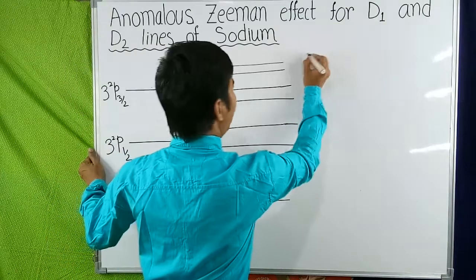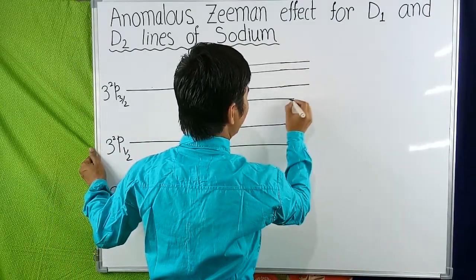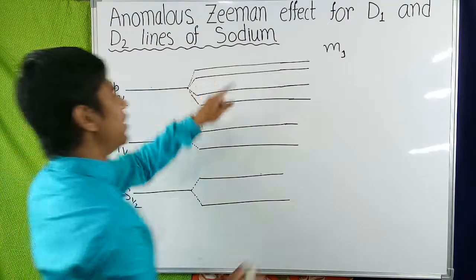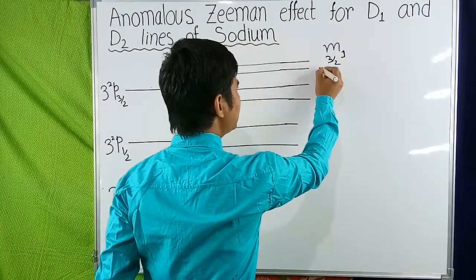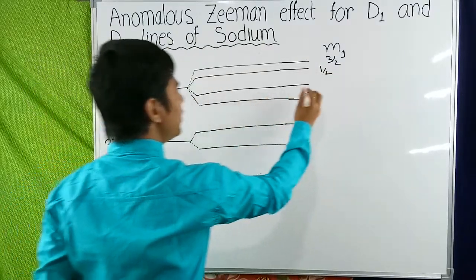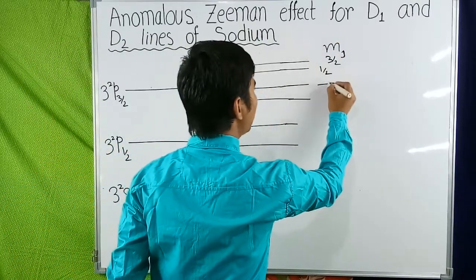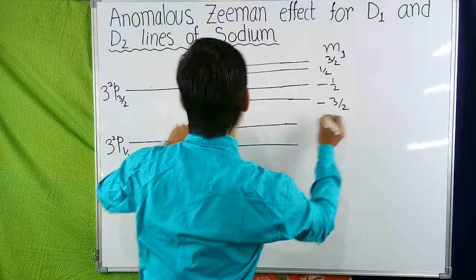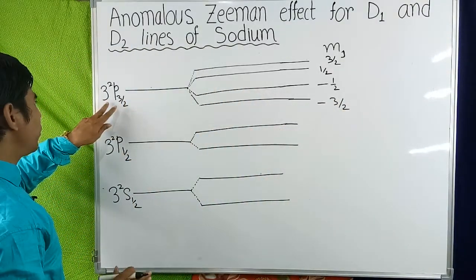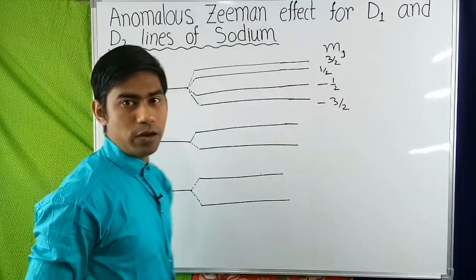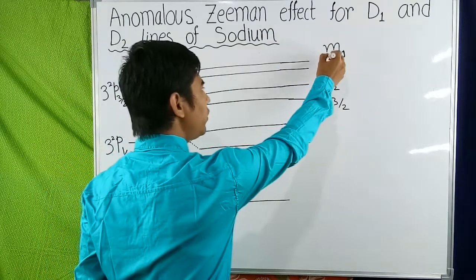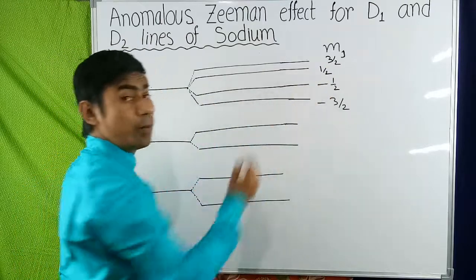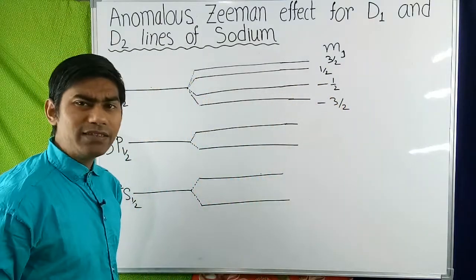Now the values of Mj for the sub-levels of the 3²P 3/2 state are as follows: the top sub-level has Mj equals 3/2, the next has Mj equals ½, the next has Mj equals minus ½, and the lowest has Mj equals minus 3/2. This state has four Mj values ranging from minus 3/2 to plus 3/2.